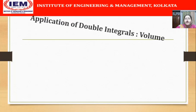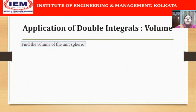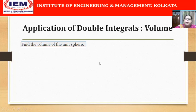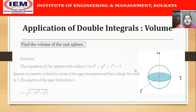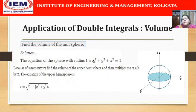Let us look at one more example: find the volume of the unit sphere. Perhaps all of us know the volume of a sphere, but let us find it by applying the theory of double integrals. Here we have a sphere with radius 1, so the equation of the sphere is x² + y² + z² = 1.